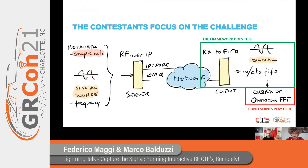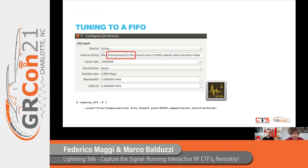On the contestant side, the experience is very smooth. Contestants run a client which connects to a ZMQ streamer on whatever server you want to host. What they receive is a FIFO which they can use as a receiver of IQ samples. They simply tune to that FIFO — which most tools support out of the box — and the tool informs them of the sample rate so they can start receiving signals as they would with GQRX, Osmocom, or GNU Radio.